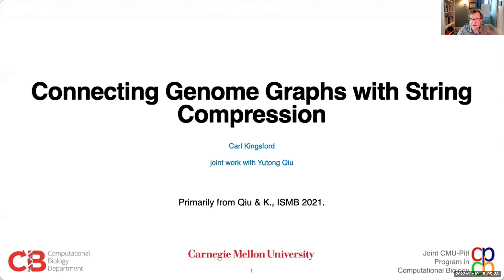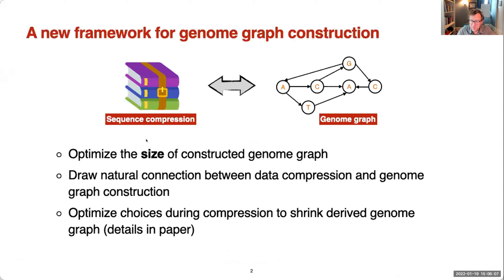Today I want to talk about some of the work we're doing to bring together ideas in the genome graph world with ideas in string compression. Everything I'm going to talk about is joint work with Yu Tong Chu, and most of it appeared in our ISMB 2021 paper, though towards the end I'll talk about some things we're working on right now. The primary focus is a new framework for genome graph construction that more closely exploits work done in sequence compression to optimize graph size, and I'll draw a natural connection between data compression and graph compression.